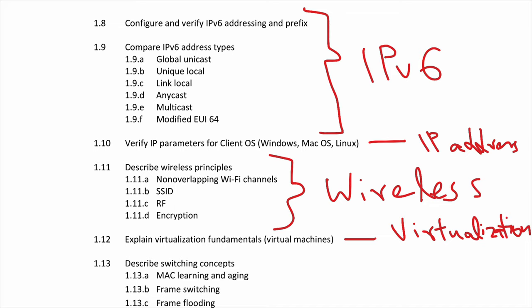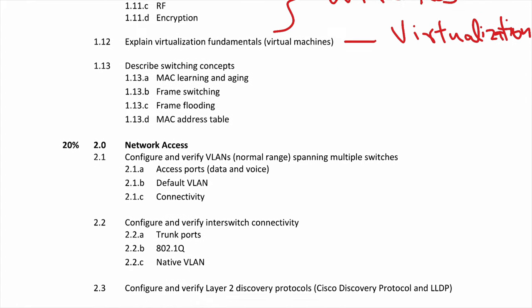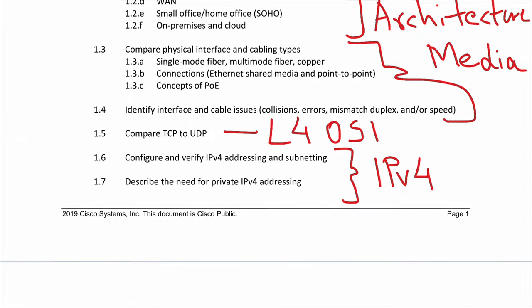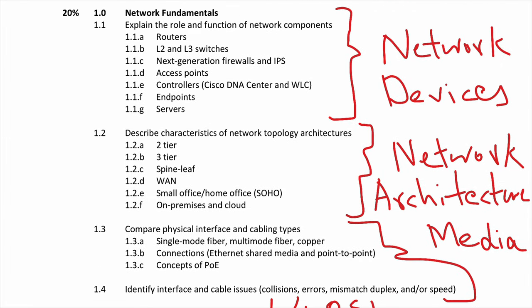That's how big virtualization is — most cloud providers and everything happening in the industry right now is built around it, and that has also accelerated automation. The final section within Section 1 of the exam is switching concepts, where we'll talk about MAC address tables and MAC learning. That wraps up Section 1, which accounts for about 20% of the overall exam — roughly one-fifth — covering the key network fundamentals you need to know.